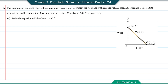Question 5. The diagram shows the x-axis and y-axis representing the floor and wall respectively. A pole LK of length 9 meters leans against the wall, touching the floor and wall at points K(alpha, 0) and L(0, beta) respectively. Part A: write the equation which relates alpha and beta. The pole is the hypotenuse, so we use the Pythagorean theorem. Alpha squared plus beta squared equals 9 squared, therefore alpha squared plus beta squared equals 81.